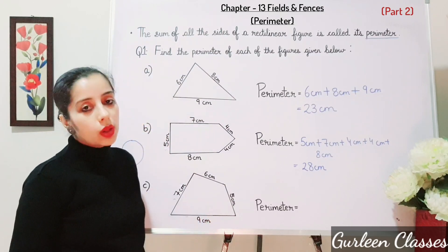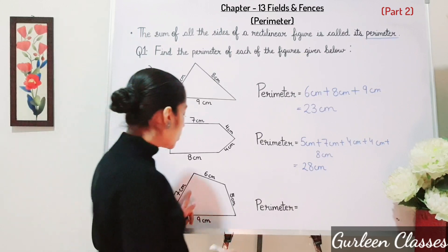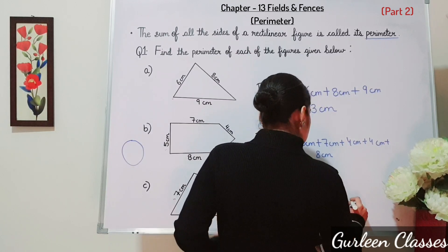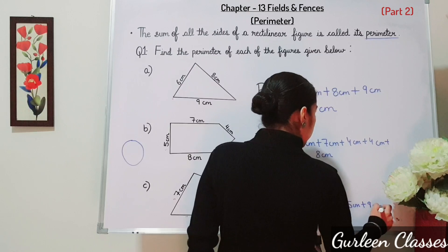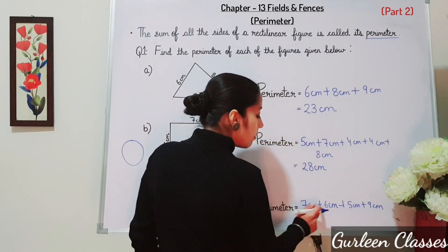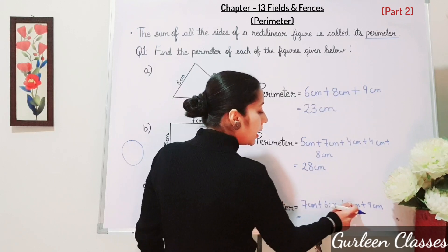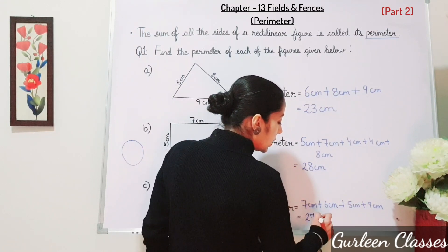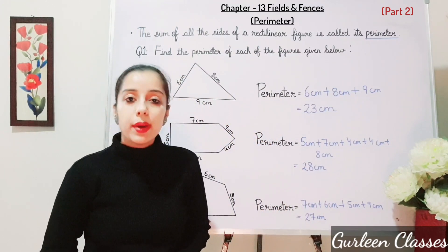Now part C — in this figure let us add all the sides given. First you have to write all the sides: 7 cm plus 6 cm plus 5 cm plus 9 cm. 7 plus 6 is 13, plus 5 is 18, plus 9 is 27 centimetres. So I hope students you are now able to find out the perimeter.